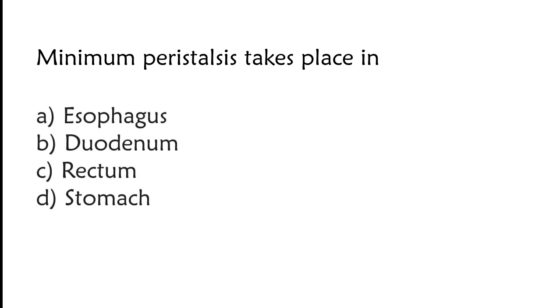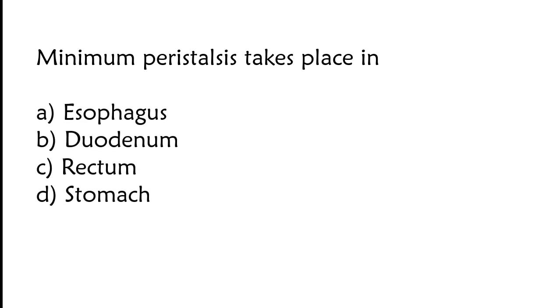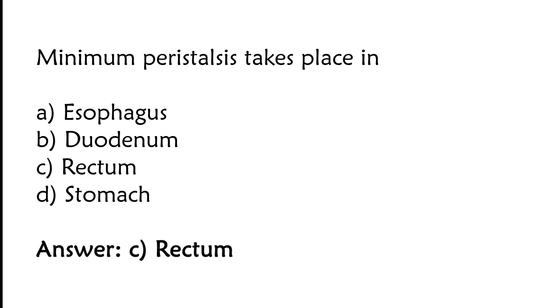Minimum peristalsis takes place in — options: esophagus, duodenum, rectum, stomach. The correct answer is option C. Minimum peristalsis takes place in the rectum.